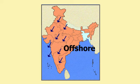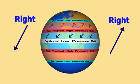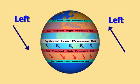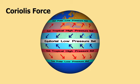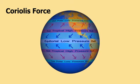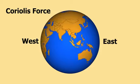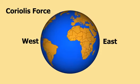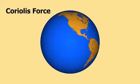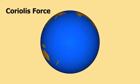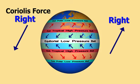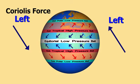Why do these winds deflect? These winds deflect to the right in the northern hemisphere and to the left in the southern hemisphere. The reason is the Coriolis force — an apparent force caused by the earth's rotation. The earth rotates from west to east at a speed of 1600 kilometres per hour. The Coriolis force is responsible for deflecting winds towards the right in the northern hemisphere and towards the left in the southern hemisphere. This is also known as Ferrell's law.